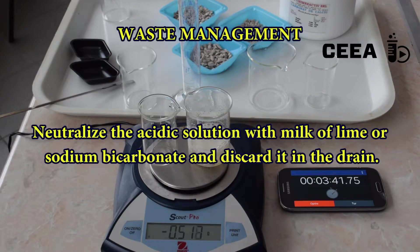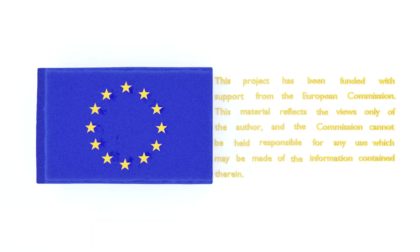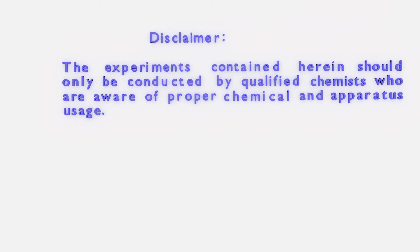To discard the waste, neutralize the excess hydrochloric acid with milk of lime or sodium bicarbonate and discard it in the drain.